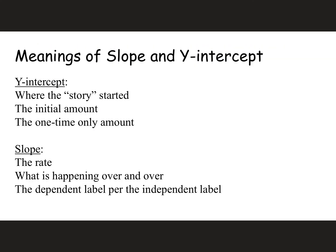Sometimes you're given the story problem and the equation, and you're asked to give the meaning of the slope or the y-intercept. The y-intercept is where your story started — it's the initial amount, the one-time only amount. Your slope is the rate, it's what's happening over and over again, or it's the dependent variable's label over the independent variable's label — in other words, your y per your x.